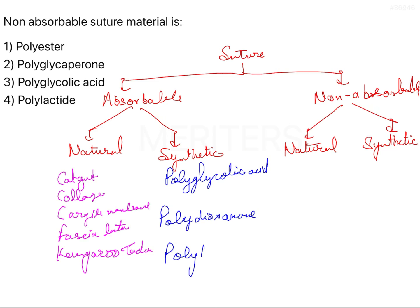In polyglycolic acid we have Vicryl, Surgicryl, Polysorb, and Dexon. In polydioxanone you have PDS-2, and in polytrimethylene carbonate you have Maxon. You have to remember these, as sometimes they directly ask these brand names.